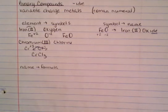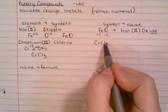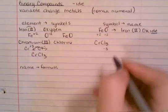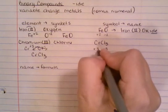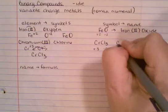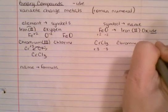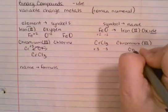How am I going to name this? If we didn't already know the charges, we know that chlorine has a -1, -1 times 3 is -3, and to add up to 0, the opposite of -3 is +3. So this would be chromium(III) chloride. Remember, it has to end in -ide.